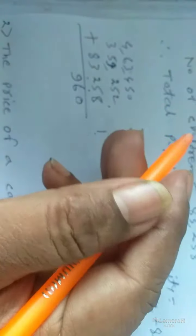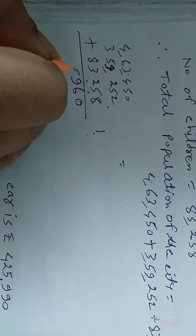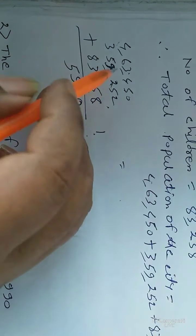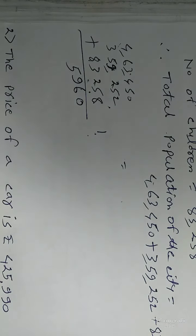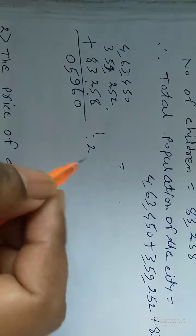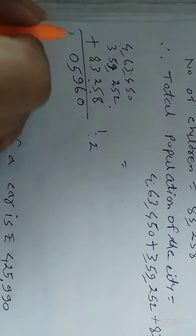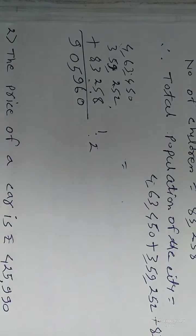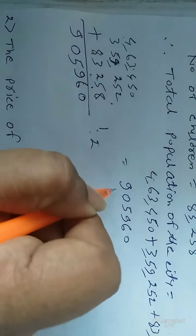9 plus 3 is equal to 12, plus 3 is equal to 15. 7 plus 2 is equal to 9. Carry 1. So 8 plus 5 is equal to 13, plus 6 is equal to 19, plus 1 is equal to 20, carry 2. 4 plus 3 is equal to 7, plus 2 is equal to 9.